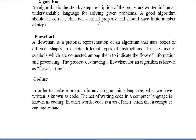Next is flowchart. A flowchart is a pictorial description — in the form of symbols and shapes — and is the same as a pictorial representation of an algorithm. The steps written in the algorithm are converted into a pictorial description. A flowchart contains sets of symbols and shapes connected to indicate the flow of information and processing. The process of drawing a flowchart for an algorithm is known as flowcharting.